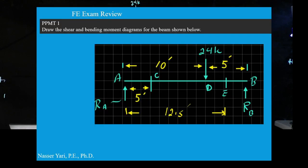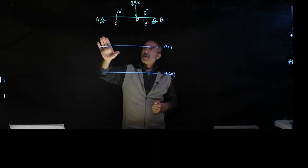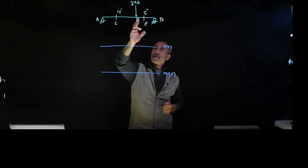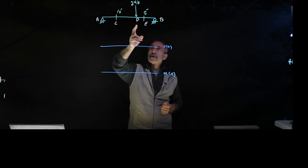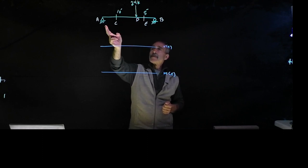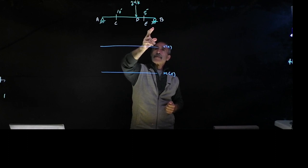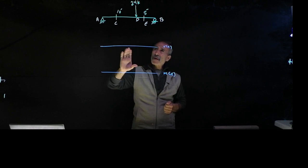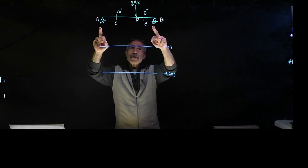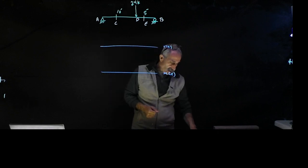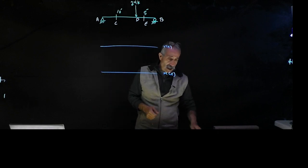The first problem is a shear moment diagram. We have a simply supported beam with the only load being a 24 kip at 10 feet away from the pin support and 5 feet away from the roller support. When you take the exam, they might give you the reaction to make it easier and quicker. If not, it takes two minutes to calculate. Let's go ahead and calculate the reaction first.